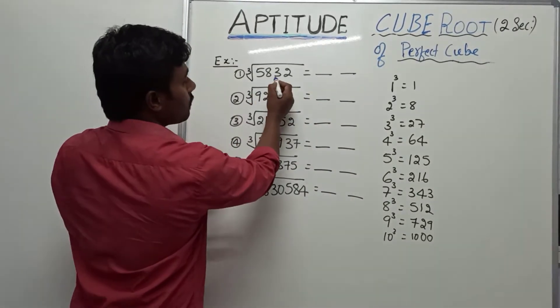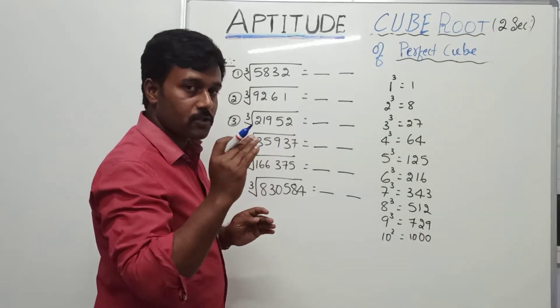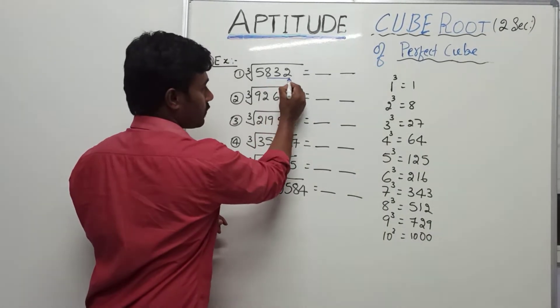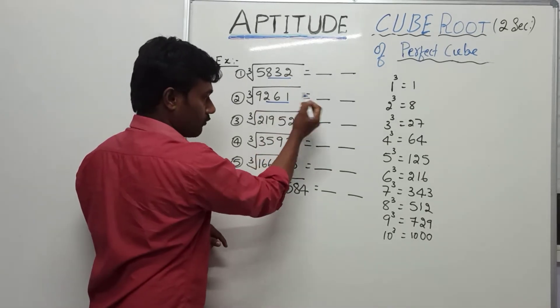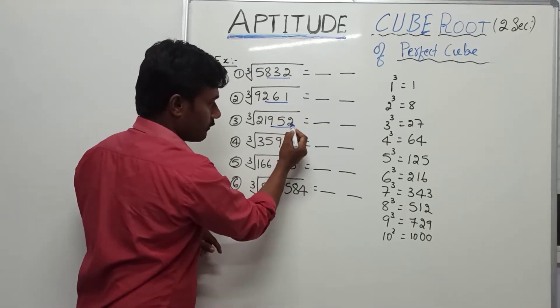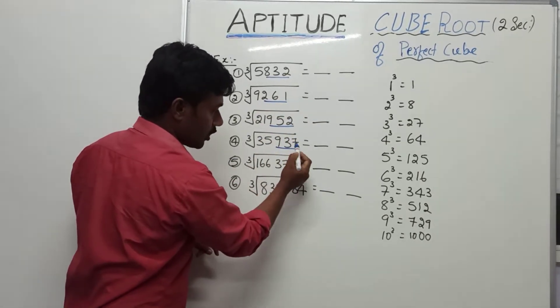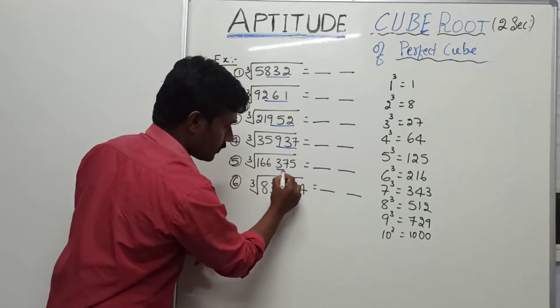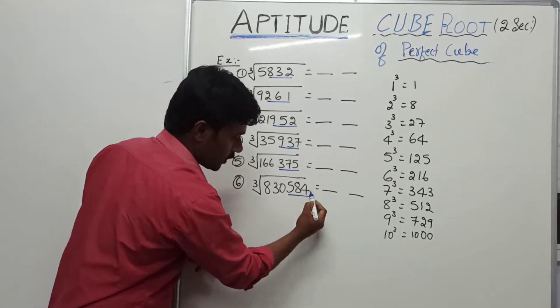See here. First, we have to separate last 3 digits. 832, 261 last 3 digits, 952 last 3 digits, here also 937, 375, 584.